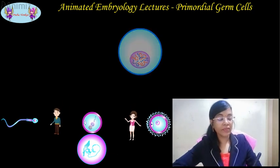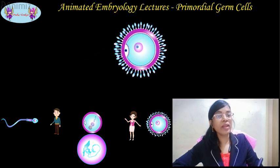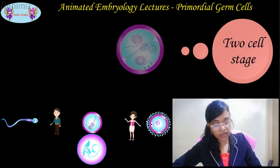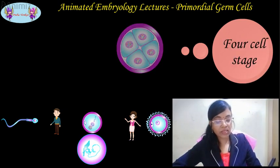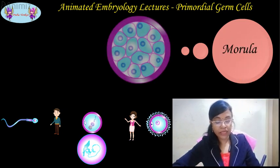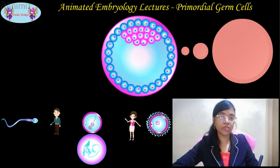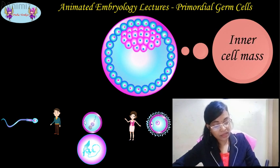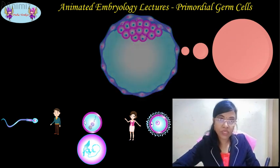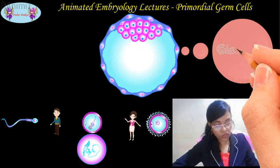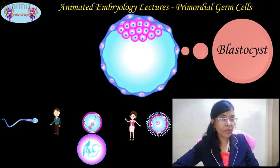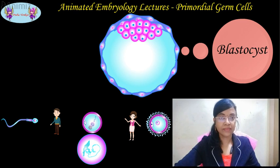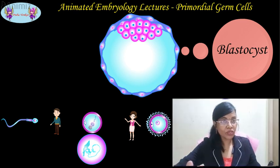Consider a sperm and an ovum uniting to form a zygote. The zygote by cleavage will pass through the two-cell stage, four-cell stage, eight-cell stage, and will be converted into a morula. These mass of cells arrange themselves into two layers: one layer outside called the outer cell mass, one layer inside called the inner cell mass, with a cavity forming in between — the whole structure converting into a blastocyst. As of now, we are concentrating on the development of the primordial germ cells.